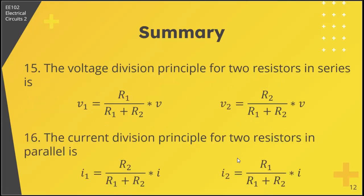Fifteenth, the voltage division principle for two resistors in series is: if you have a source voltage V and two resistors, then V1 equals R1 over R1 plus R2 times V, and V2 equals R2 over R1 plus R2 times V. This shows that the voltage drop is directly proportional to the resistance value. If the resistance is larger, then the voltage drop across it is larger.